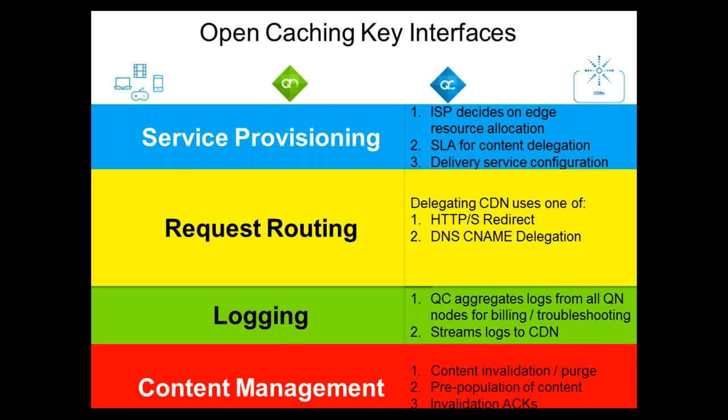I'm curious about the VNF you implemented as a VM in CORD — what are its responsibilities? It seems like the actual cache is a different cluster, there's this API management layer, and then the VNF. So it feels like the only purpose of the VNF would be some sort of router or routing protocols. Can you elaborate on what the VNF does?